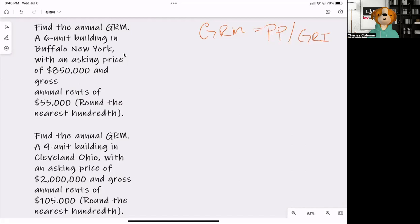So as we're going through here, based on what we just looked at, we're going to take $850,000 and divide it by $55,000. That is going to give us a gross rent multiplier of 15.45.